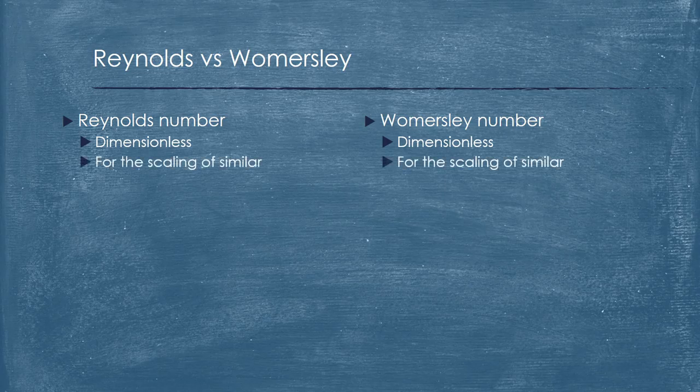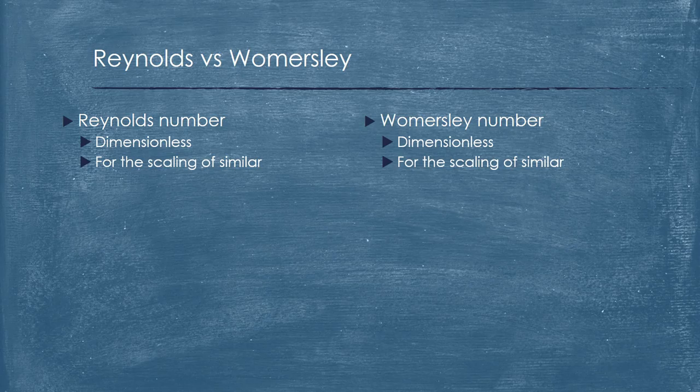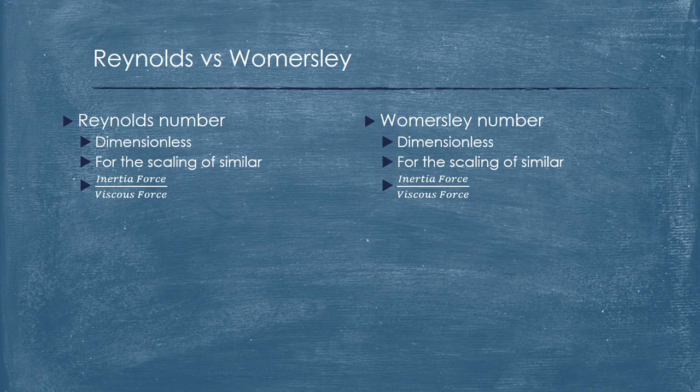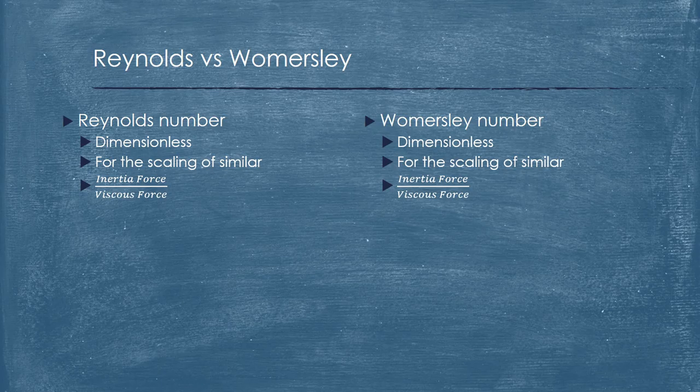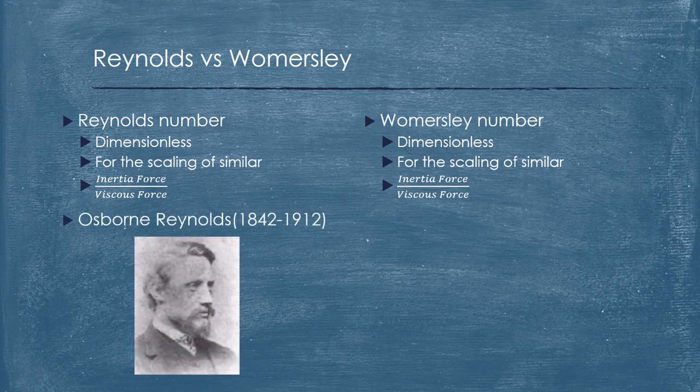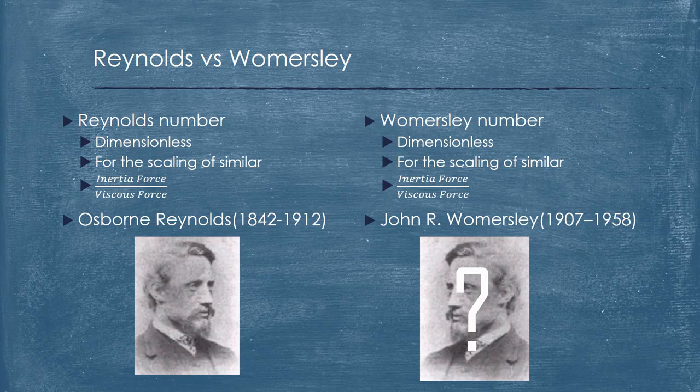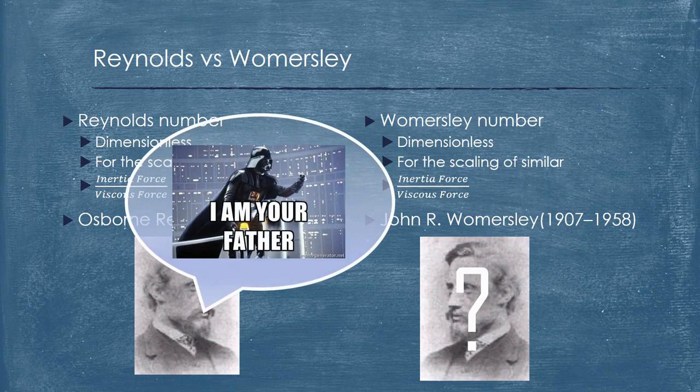The tricky thing here is the two numbers have the same physical meaning, which is the ratio of the inertia force to the viscous force. So the difference of these two numbers is just one is named by Osborne, another one is named by John. So why do people need two numbers that have the same physical meaning?